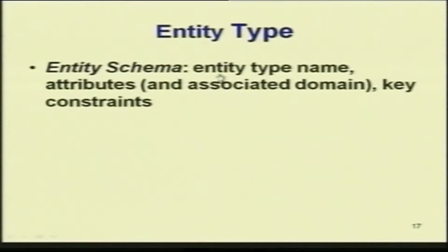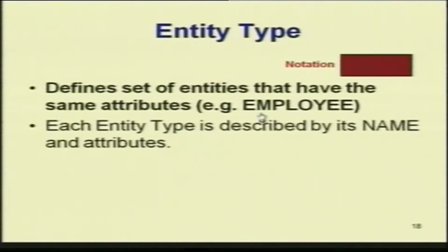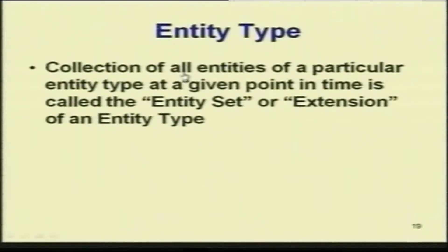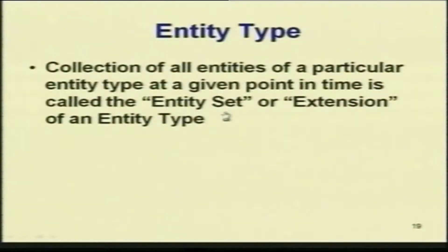Basically, an entity type is characterized by a name like student, a description, an identifier, and a domain. The entity type name along with attributes and the key is called the entity schema. The notation defines sets of attributes — entities having the same attributes. Each entity type is described by its name and attributes. Entity type describes a schema or intension of the set of entities — it does not have actual values, it just describes the schema.